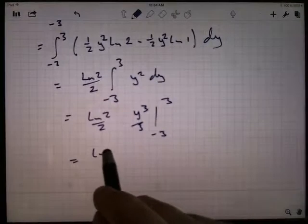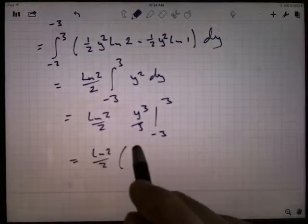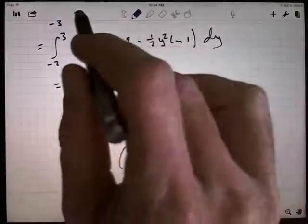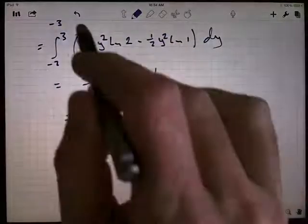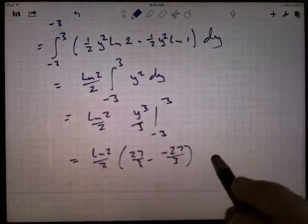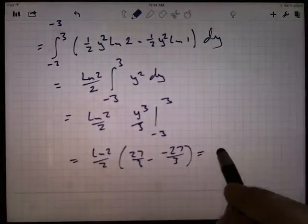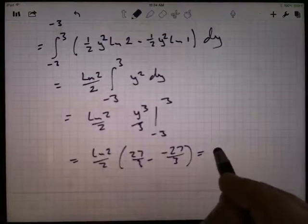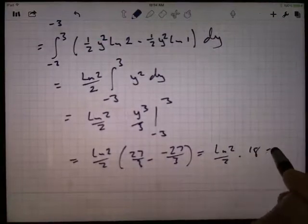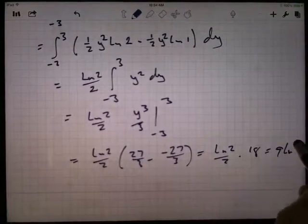And so I've got natural log 2 over 2 times, what do I got, 9 over 27? No, I don't. I've got 27 over 3 minus negative 27 over 3, so that's 18 again. I've got natural log of 2 over 2 times 18, which is 9 times the natural log of 2.